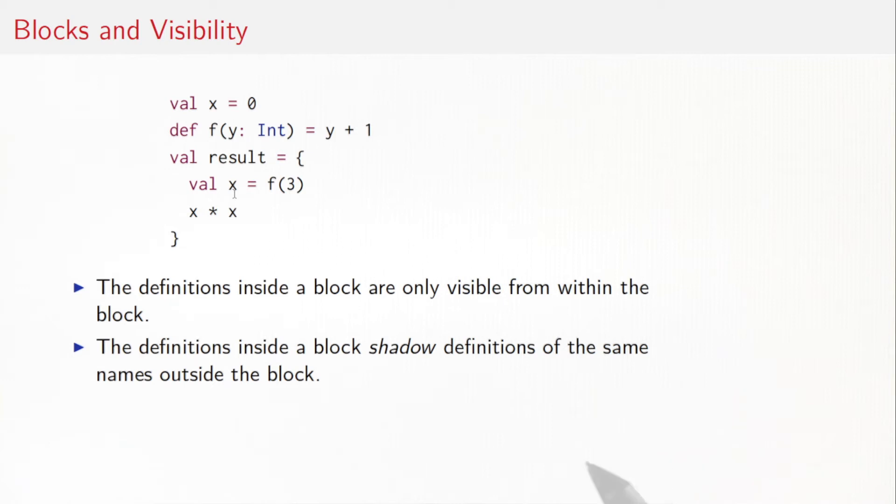The second rule is the definitions from outside the block are visible in the block as long as they are not shadowed by definitions of the same names inside the block.